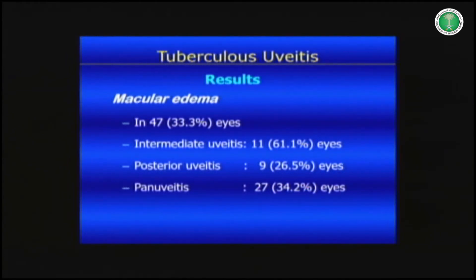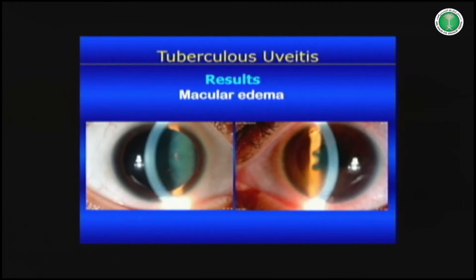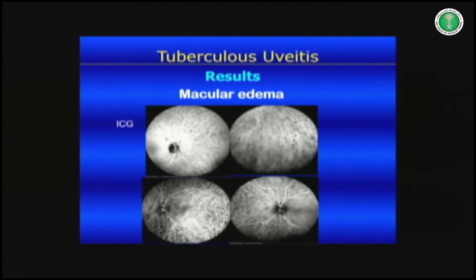Macular edema is a common complication in ocular TB — 33% of eyes overall had macular edema; in patients with intermediate uveitis-like picture, 61% had macular edema; in posterior uveitis, 26%; and in panuveitis, 34%. The good news is that if you treat the patient properly with anti-TB treatment and a short course of systemic corticosteroids, you can control this edema. In one case with severe cystoid macular edema, mutton fat KPs, and posterior synechiae, ICG revealed multiple granulomas as rounded or oval hypofluorescent patches.